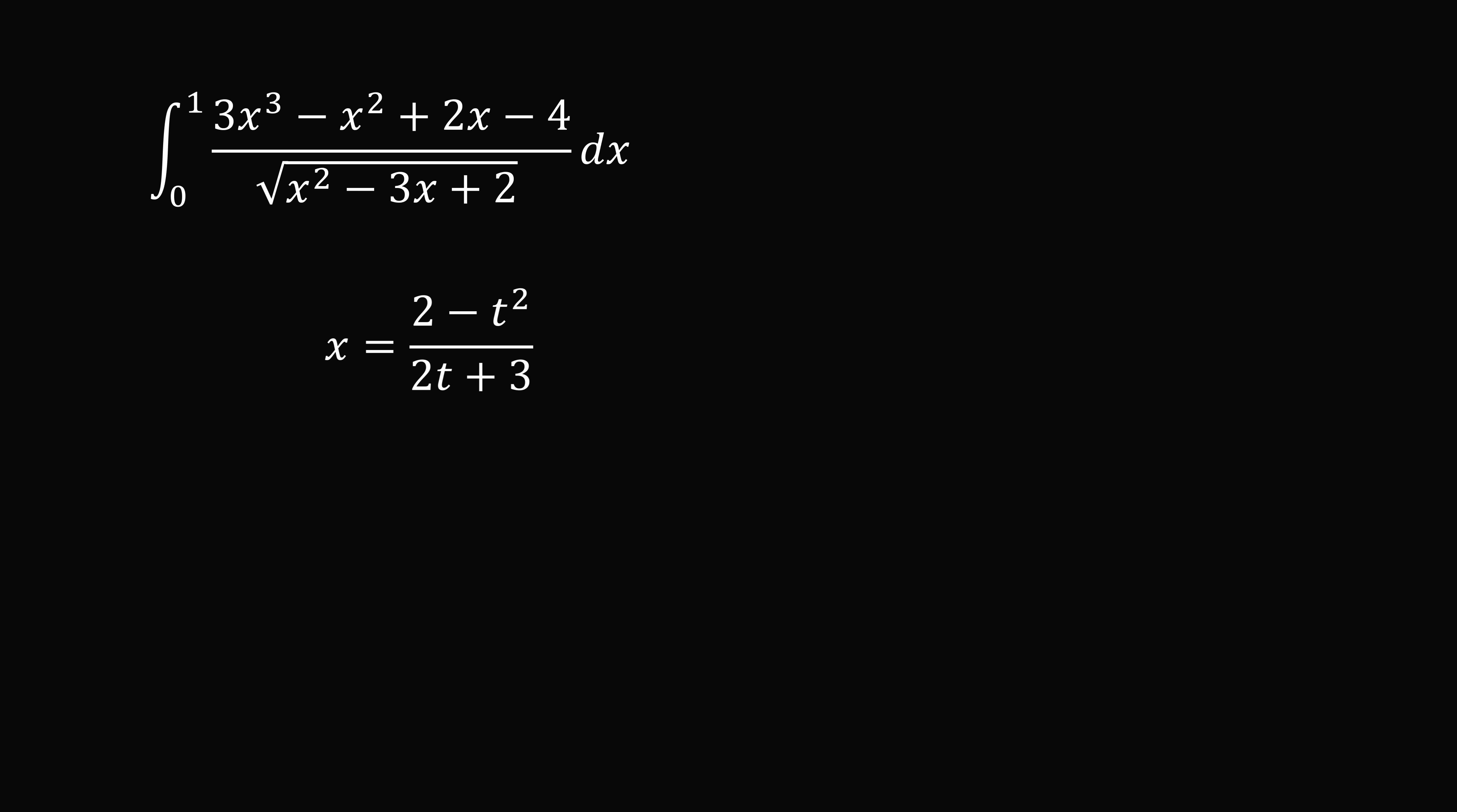Now with this substitution, we also want to convert dx into dt. We can do that by the quotient rule. It's going to be a little bit tedious, but it's not too difficult. We also have an integral where x goes from 0 to 1. So we need to change the limits of integration. We evaluate this and we get that t goes from the square root of 2 to negative 1.